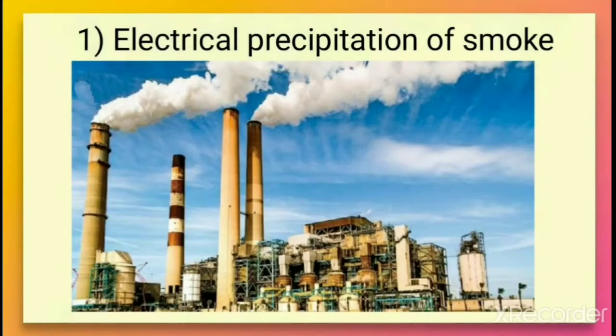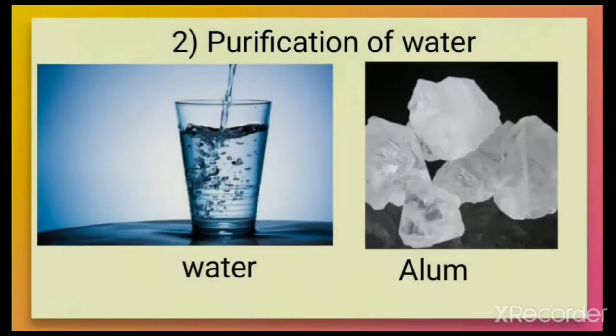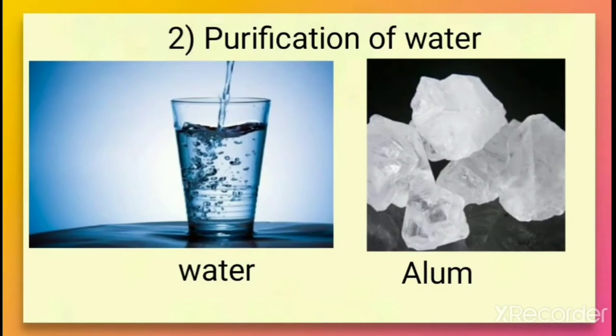In this way, dust particles are removed from the smoke given out by chimneys. For purification of water, the water obtained from natural sources often contains suspended impurities. When we add alum to the water, it coagulates the suspended impurities and makes the water fit for drinking.